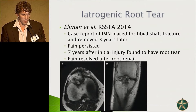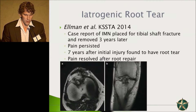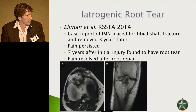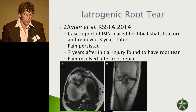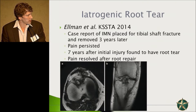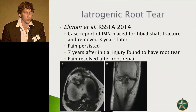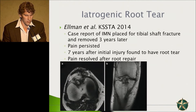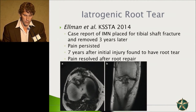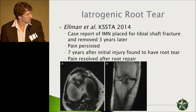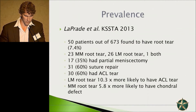Regarding iatrogenic root tear — this is a great case report in KSSTA looking at an intramedullary nail placed for a tibial shaft fracture. The patient continued to have pain even after the fracture healed. The nail was removed three years later and pain continued. Not until seven years later was it found that the patient had a significant anterior root tear. After proper meniscal repair of that anterior root the pain resolved, requiring lysis of adhesions of the avulsed anterior horn from the anterior capsule to restore it to its native state. The patient was back to full activities after five months.